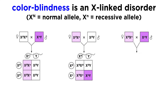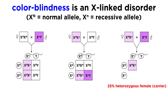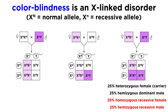Lastly, if the mother is a carrier and the father is colorblind, there is a 25% chance offspring will be a carrier, 25% hemizygous dominant, and a 50% chance of being colorblind, with the possibility of producing a colorblind female, which is far more rare, given that both parents must possess the rare recessive gene.